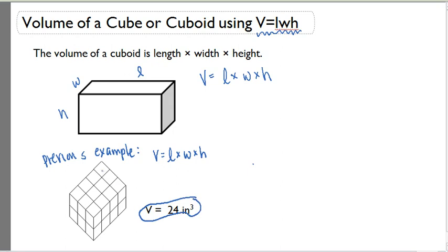So let's take a look. If I figure out the length of this cube, it looks like length equals 4 inches. The width of this cuboid is 3 inches, and the height is 2 inches.